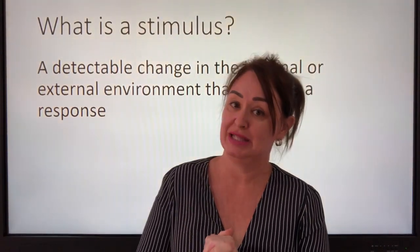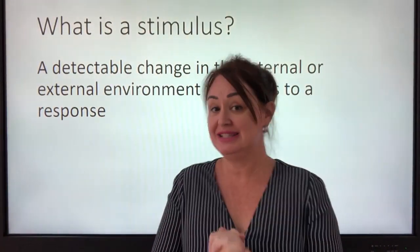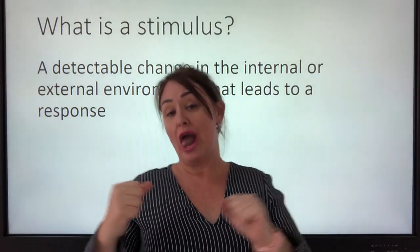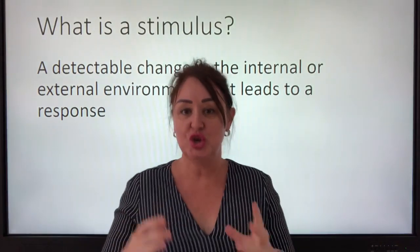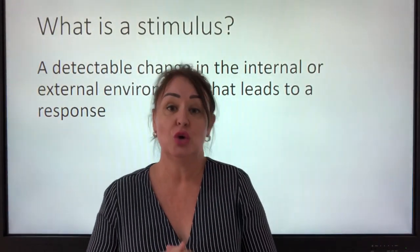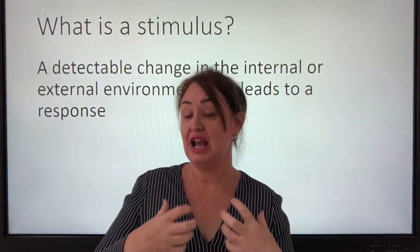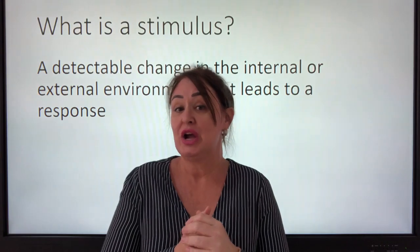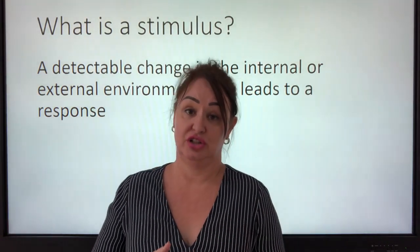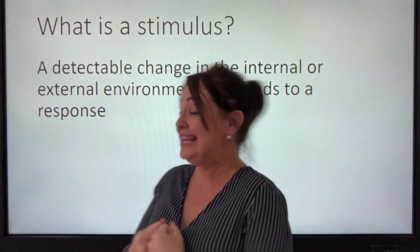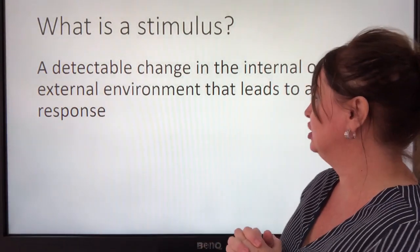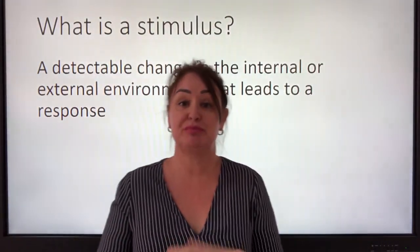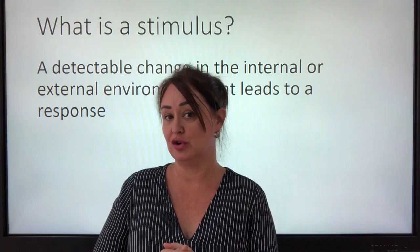The first thing we're going to look at is: what is a stimulus? A stimulus is different from one organism to another, because it's a change in your internal or external environment that you can detect. So clearly we don't have all the same receptors as, for instance, bats, which are another type of mammal, and so a stimulus to them is different to a stimulus to us. It's any detectable change in the internal or external environment that leads to a response — in other words, you must have receptors for it.